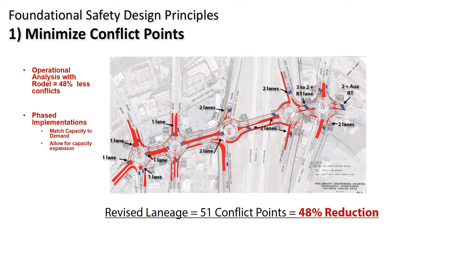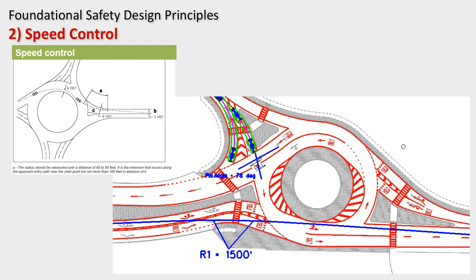In addition, you can look at phased implementation to match your capacity to demand for the early years and allow for potential capacity expansion for long-range traffic. Speed control and the fast path analysis is very well known — people typically don't miss this. Here's an example of a project though that has an excessive radius. Some folks say they don't worry too much about that, but it's important.